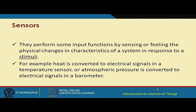Based on certain stimuli, sensors measure changes in the physical characteristics of the environment or a system, and these changes are converted to electrical signals. For example, for a temperature sensor, heat is converted to electrical signals, and for atmospheric pressure sensors, atmospheric pressure is converted to electrical signals. Different sensors measure different things, but their sensed values are all converted to respective electrical signals.